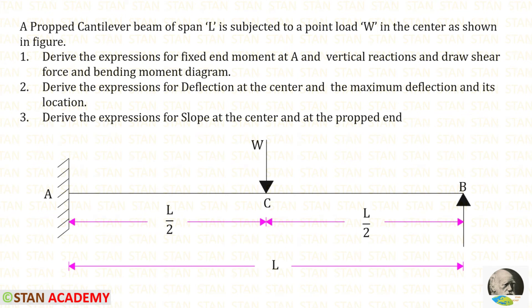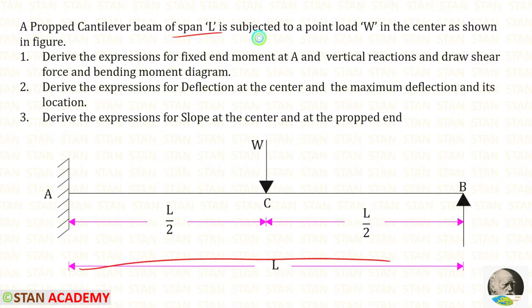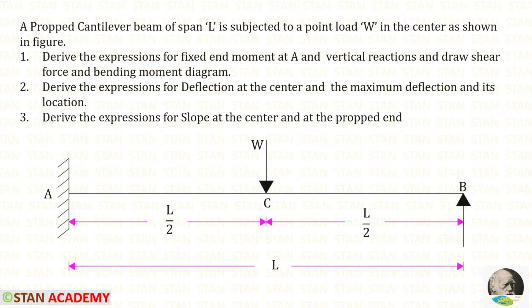Hello everyone. Today we are going to analyze a propped cantilever beam. This beam has a span of L and it is subjected to a point load W at the center. First we are going to find the expressions for the fixed end moment at A and for the vertical reactions. Then we are going to draw the shear force and bending moment diagrams.